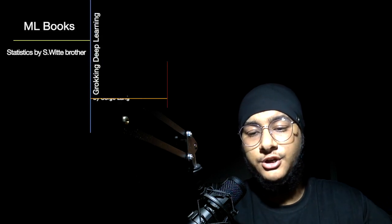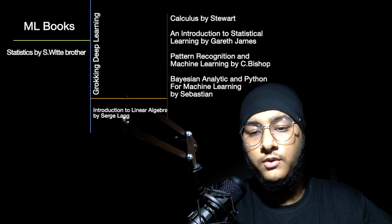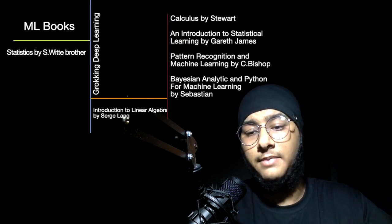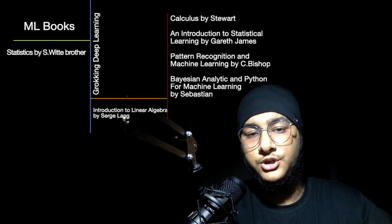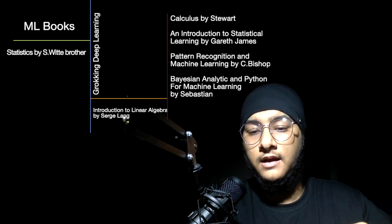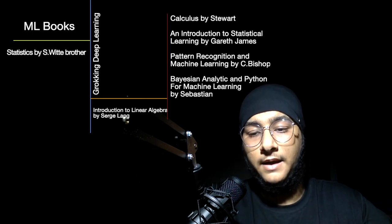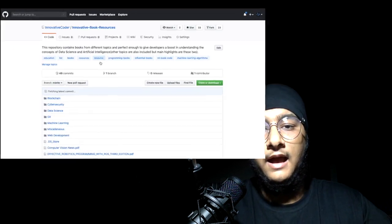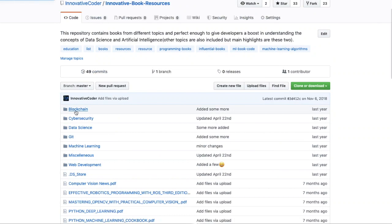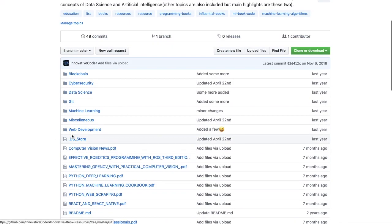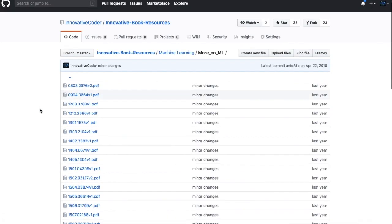Now for books: the first is Statistics by S. White Brother; second is Grokking Deep Learning; third is Introduction to Linear Algebra by Serge Lang; Calculus by Stewart; Introduction to Statistical Learning by Gareth James; Pattern Recognition and Machine Learning by C. Bishop, focused on computer vision; Bayesian Analysis with Python for Machine Learning by Sebastian; and many books by Packt Publishing. I also have free books on my GitHub under a repository called Innovative Books — link in the description.